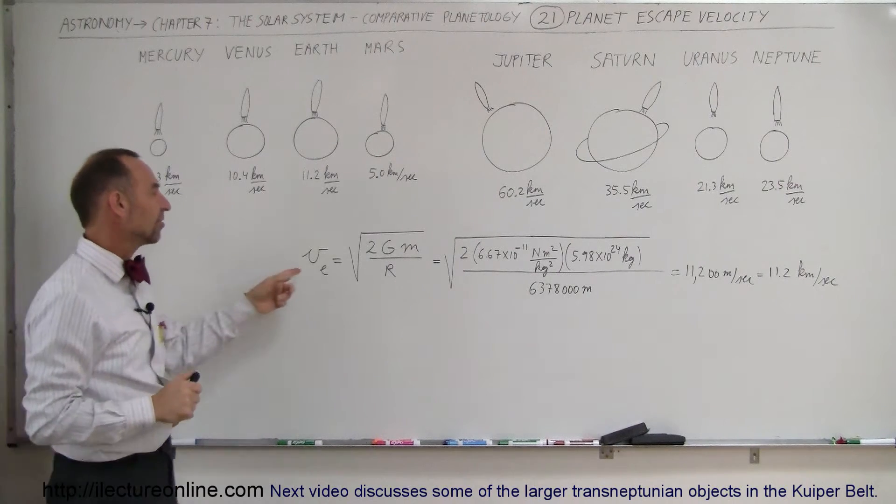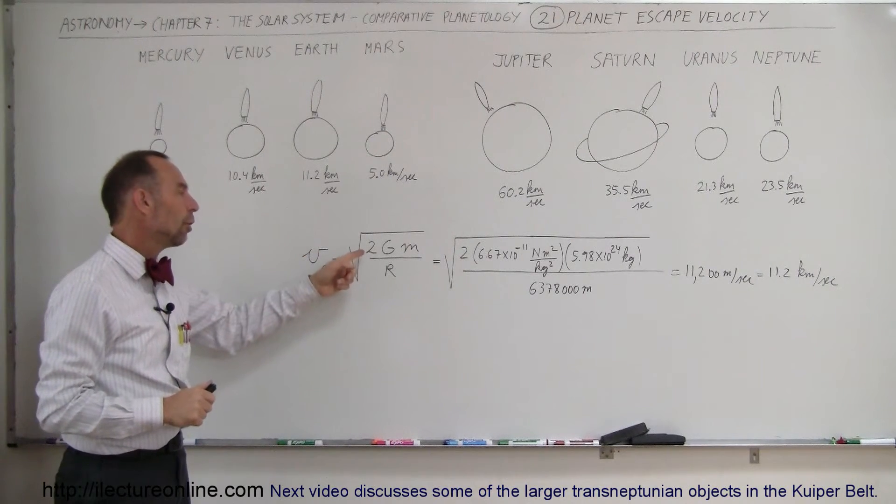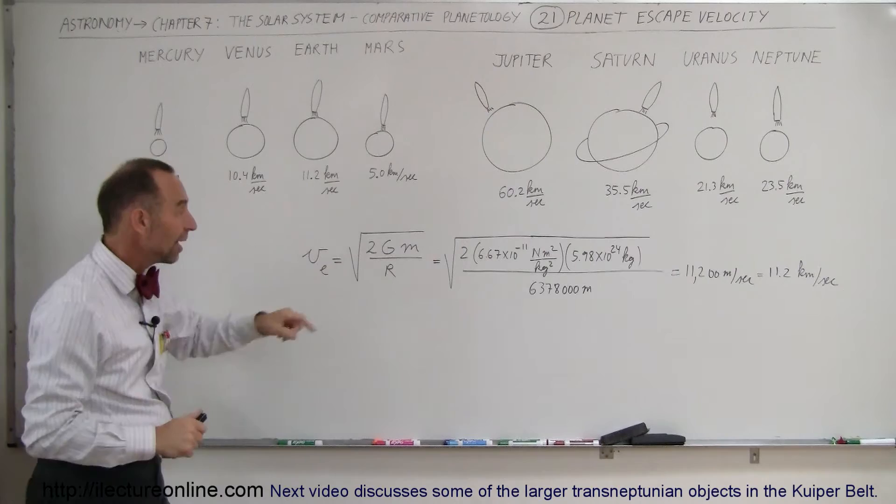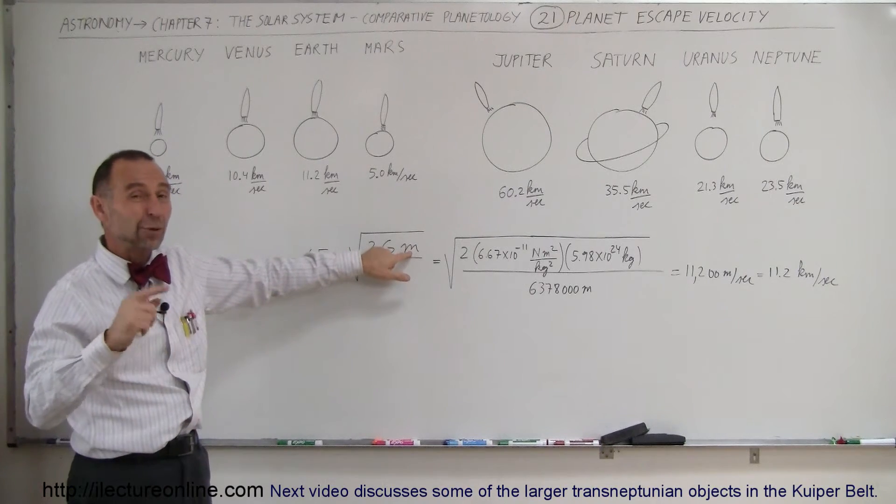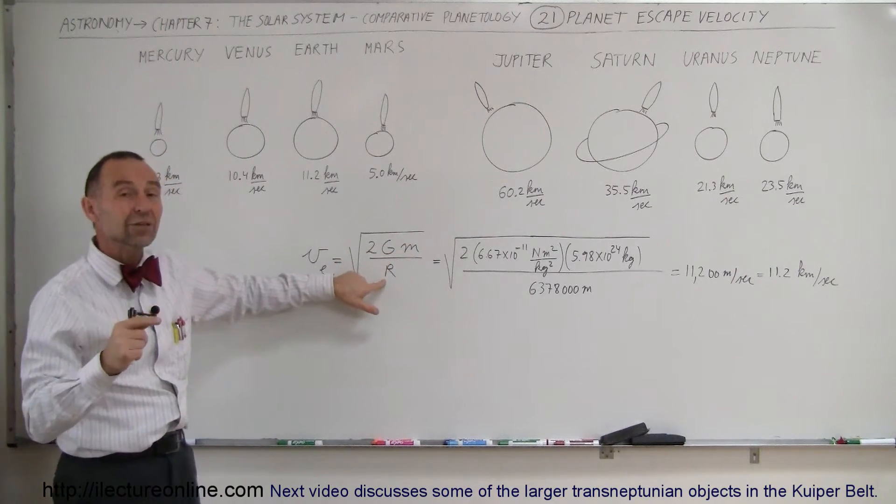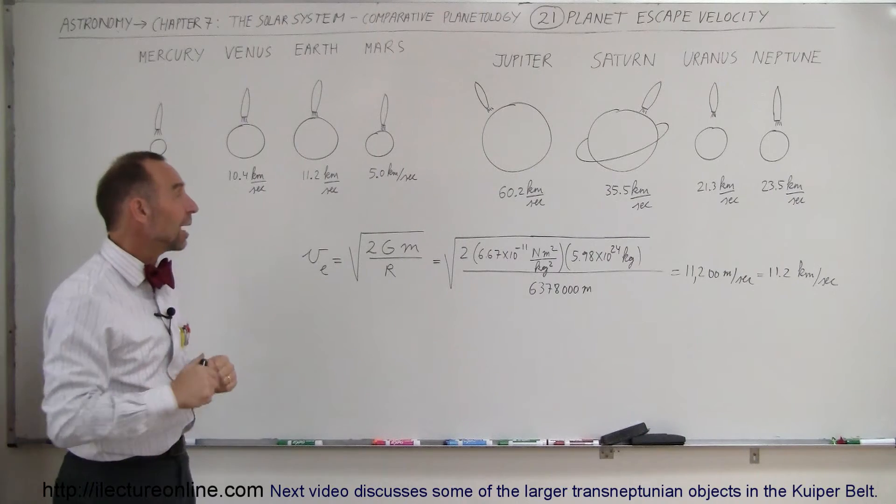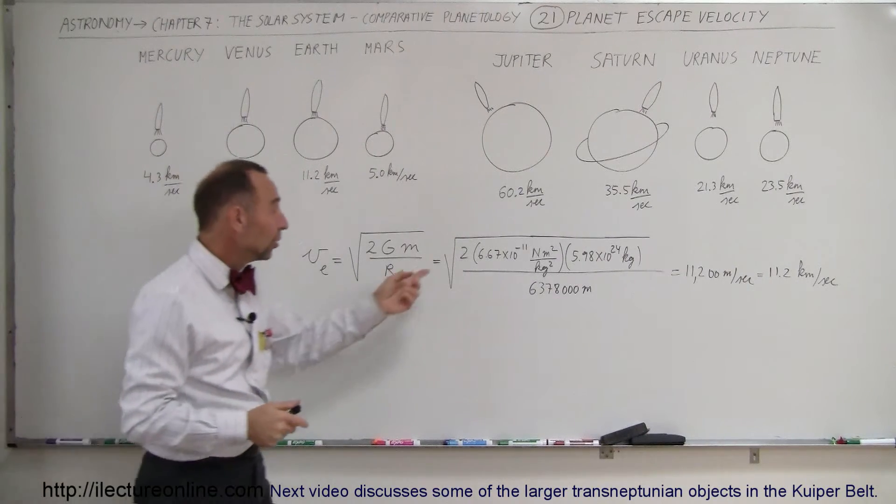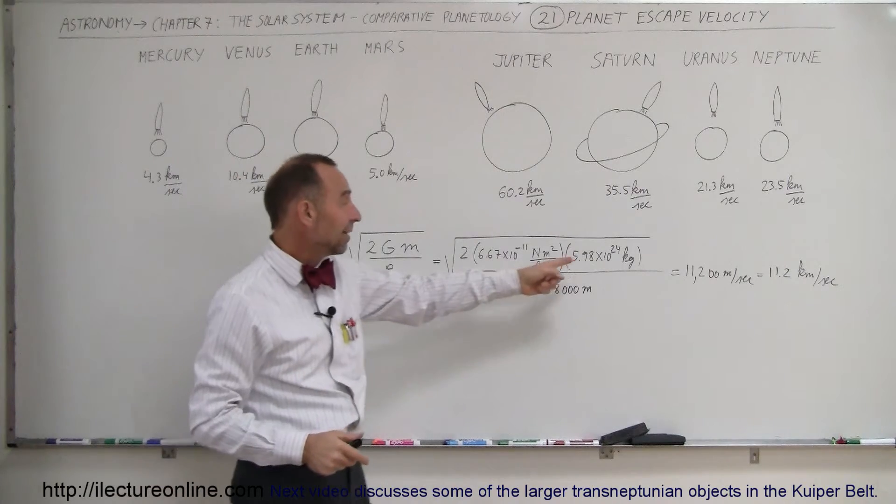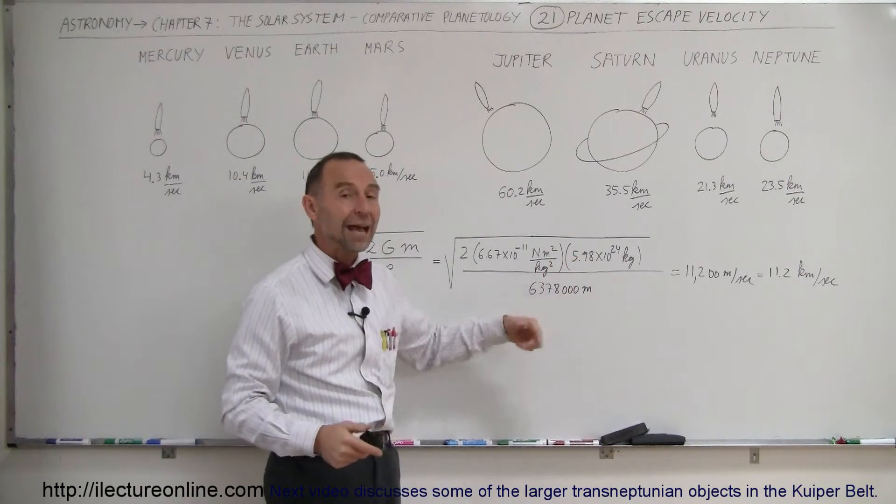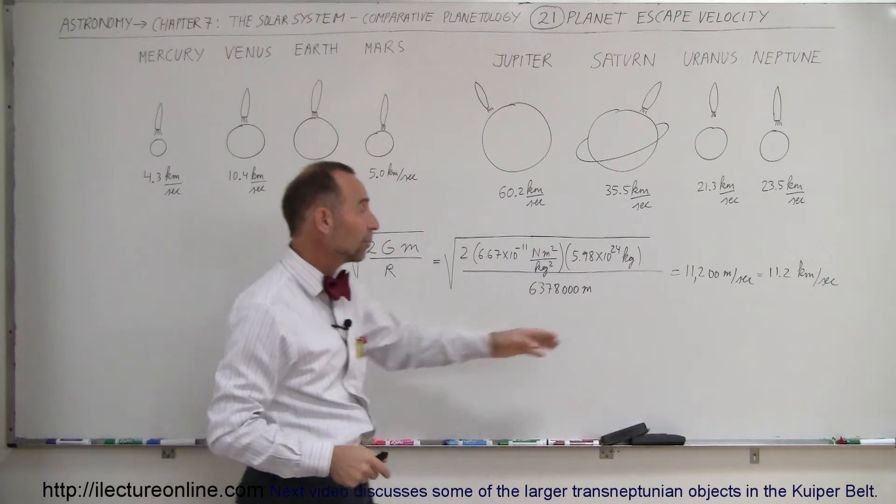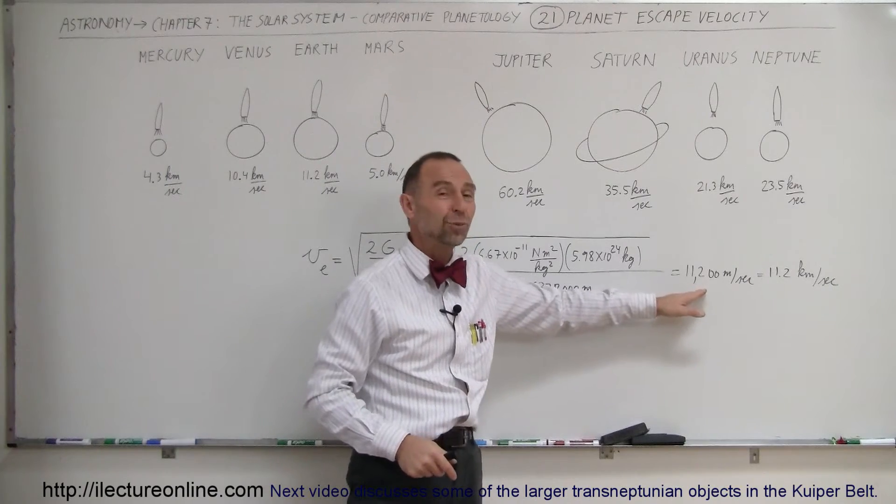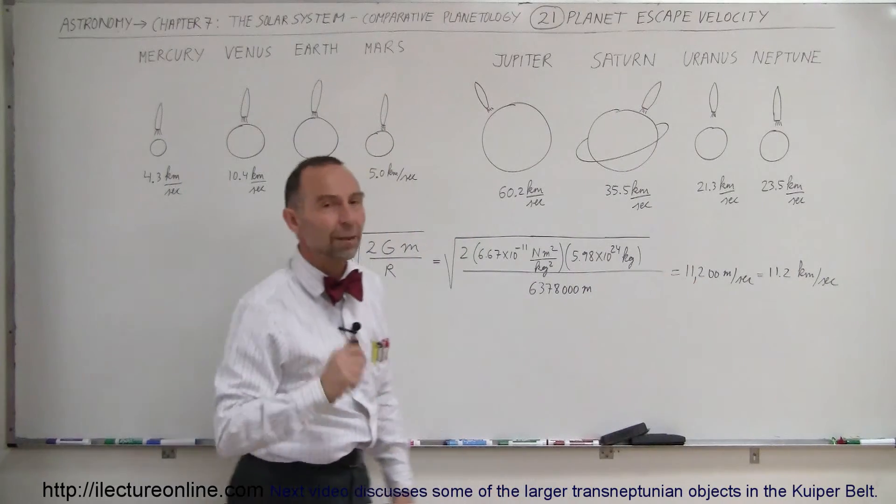How do we calculate that? The escape velocity is equal to the square root of 2 times the gravitational constant, times the mass of the object you're trying to get away from, divided by the radius of the object, in this case the radius of the Earth. So numerically, 2 times the gravitational constant, times the mass of the Earth, divided by the average radius of the Earth, and that comes out to be 11,200 meters per second, or 11.2 kilometers per second.